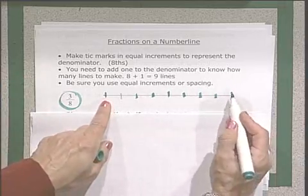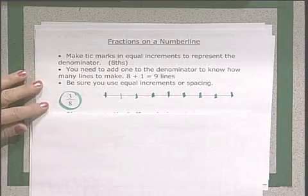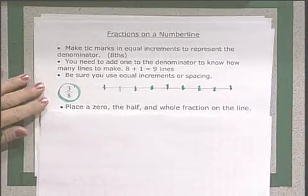So you always need one more line, because you have a line at the beginning and the end. Now, where do we place this three eighths on the number line?